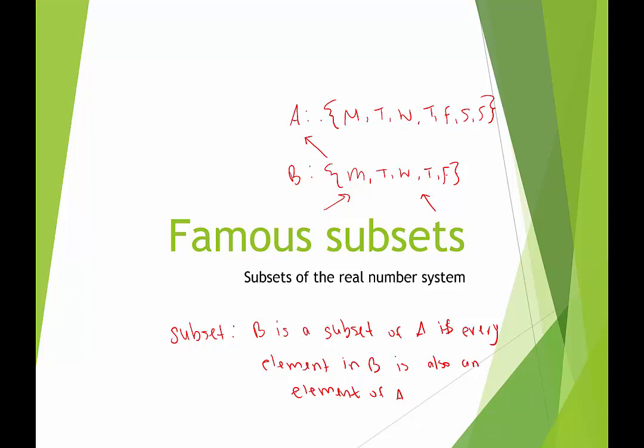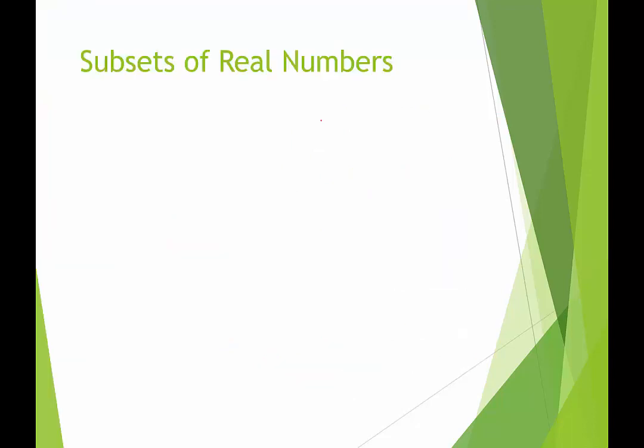Now the next question is, what is the real number system? The real number system is all the numbers or any of the numbers that could be represented on a number line. So if you can draw a number line and you can approximate or find exactly where that number should be, then that is a real number. We're going to look at the subsets of real numbers. Remember, real numbers, anything that can be represented on a number line.